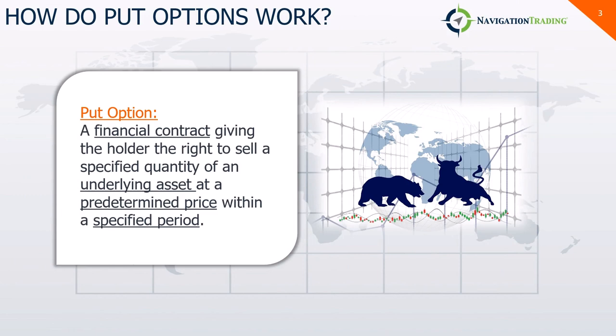First, how do put options work? Put options, or commonly just called puts, give you the right but not the obligation for the holder of a financial contract to sell a specified quantity of an underlying asset at a predetermined price within a specified period. So buying puts is similar to shorting or short selling, which we'll get to later. For the purpose of this video, we will mostly be looking at a situation where you would be the buyer of a put option contract.